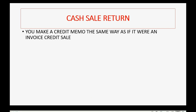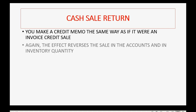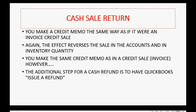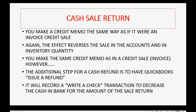For a cash sale refund, you make a credit memo the same way as for a credit invoice sale. The effect still reverses the sale in the accounts and inventory quantity. However, the additional step for a cash refund is to have QuickBooks issue a refund, which records a write-a-check transaction to decrease the cash and bank account by the amount of the sale return.